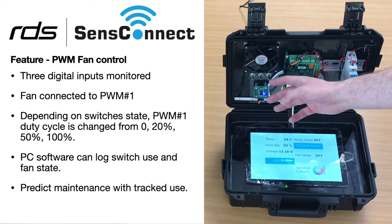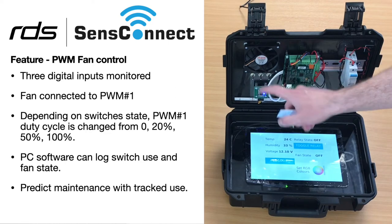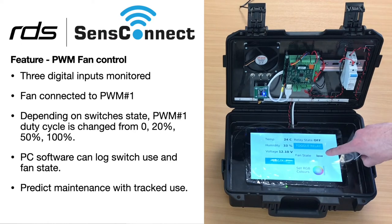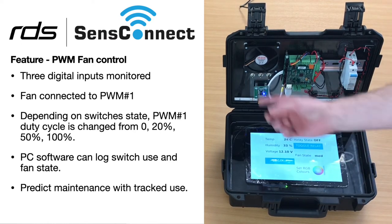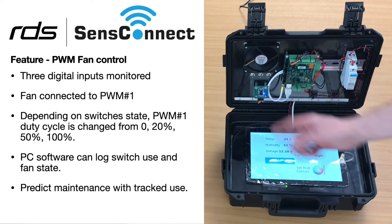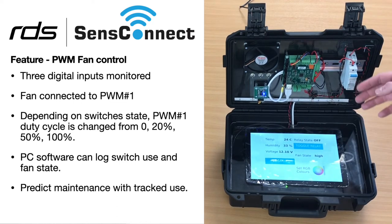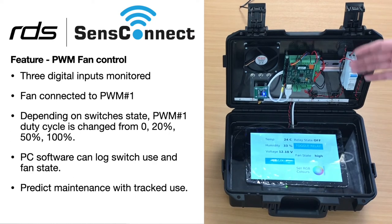On the left hand side we have a fan, and we're controlling it using three digital inputs represented by these switches. When I flick one on, you can see the fan state is set to low. Flicking the second switch sets it to medium, and the third to high. At each of these intervals, the USB IO outputs a different PWM duty cycle.